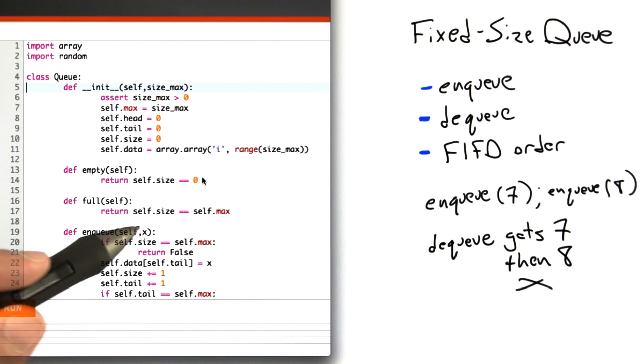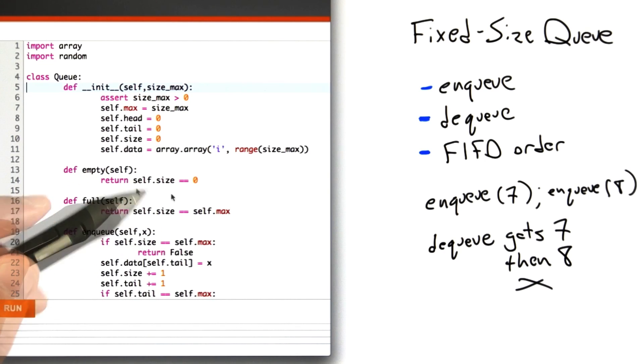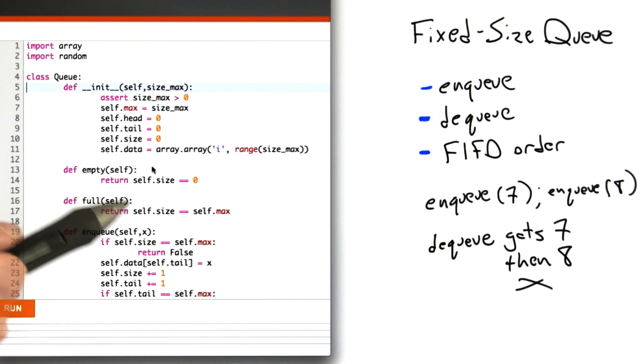One implementation option for a queue in Python would be to use a Python list, which would be basically trivial since Python lists already pretty much natively support enqueue and dequeue operations. The problem with a Python list is they're dynamically allocated and dynamically typed, which makes them not very fast.